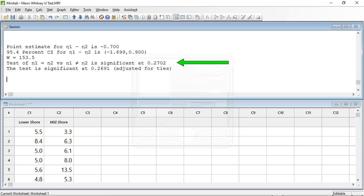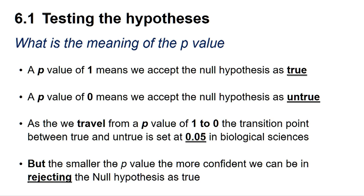The probability value is given as 0.2702. So what is the meaning of the p-value?